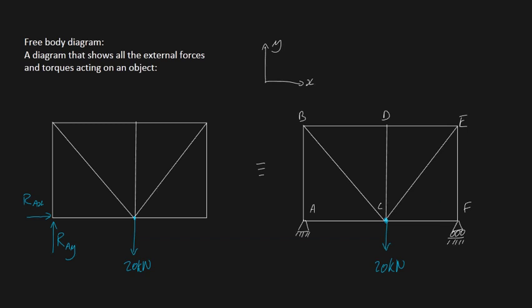We're also going to have forces at point F. We replace this roller support with an external reaction force to trick the truss into thinking it's still supported — the reaction force at point F in the Y direction, RFY. You might ask how we know RAX is positively to the right. We don't at this point — we assume a direction, calculate, and then determine from the sign whether the force is actually in that direction.